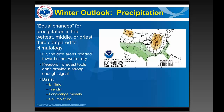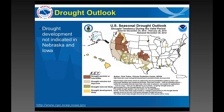One good piece of news from the drought outlook: we don't have drought in the area now, and we do not have drought development indicated in our area in the next three months. This goes well with some of the information shown earlier indicating that if anything, we might tilt just a little bit toward the wet side in parts of the winter months.